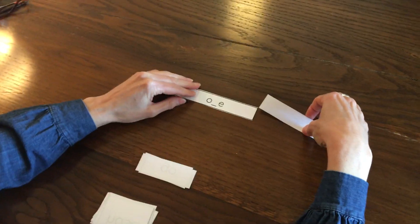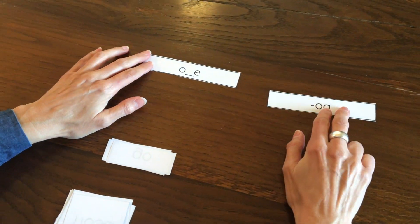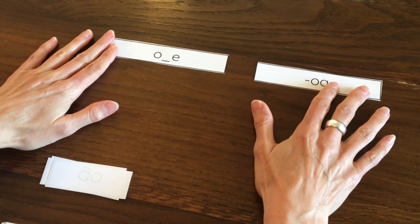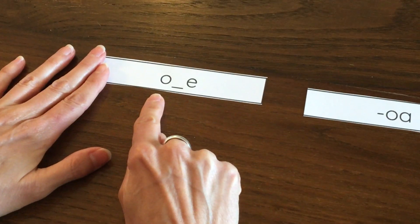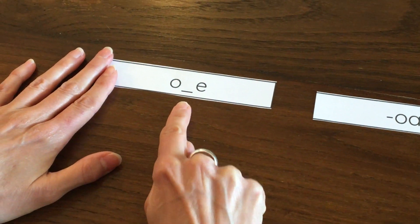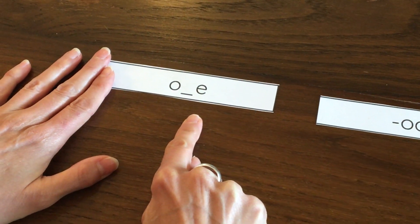Boys and girls, today we are going to look at words that have the O sound in them, spelled two different ways. Spelled with an O and a consonant in the middle and a silent E at the end.